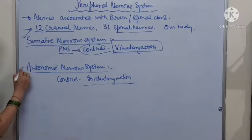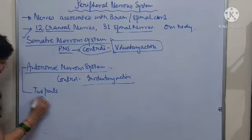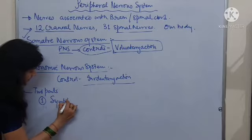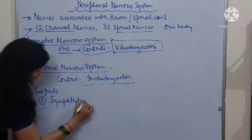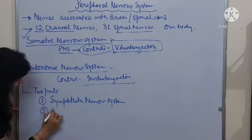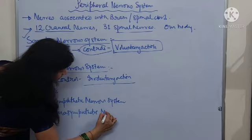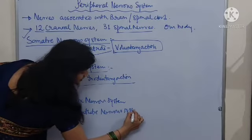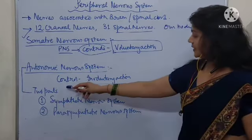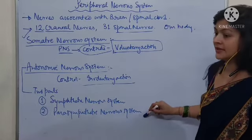The autonomic nervous system has two parts. The first one is known as the sympathetic nervous system and the second one is the parasympathetic nervous system.